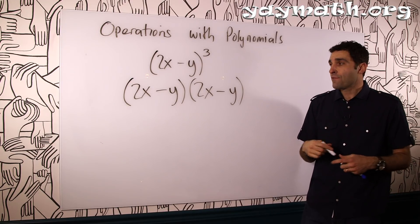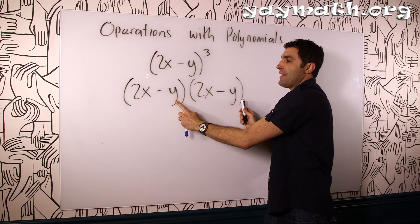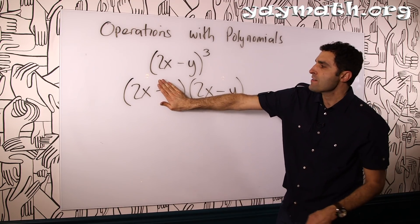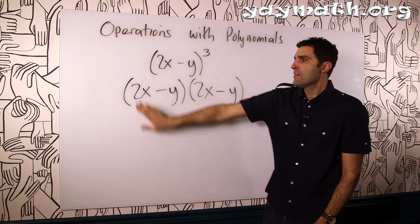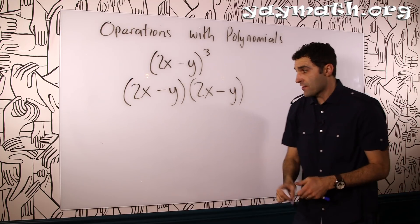People call this FOIL: first, outer, inner, last. Basically, it's distributive property. The 2x will multiply by 1, 2, and then when we're done, the negative y will multiply by 1, 2. Let's go ahead and do that.